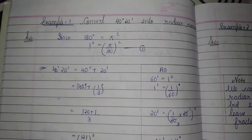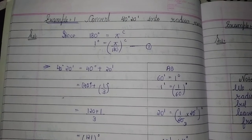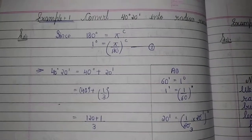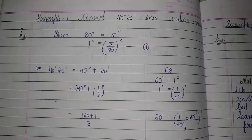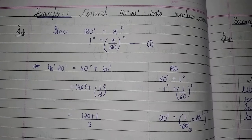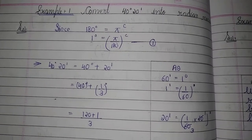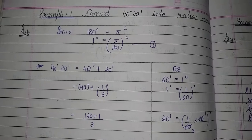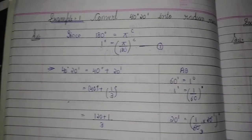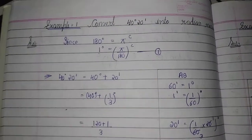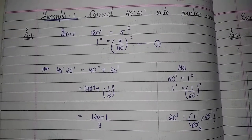This is Chapter 3, Example 1, which says to convert 40 degrees 20 minutes. As I have told you, the degree sign is a sign and one line is the sign for minutes. So let's convert 40 degrees 20 minutes into radian measure.